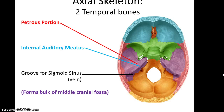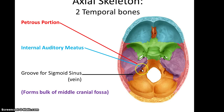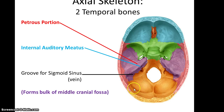Take the top of the skull off and look down. You see the temporal bone also has the petrous portion, where the inner workings of the ear will be. It has the internal auditory meatus and a groove for the sigmoid sinus. That groove for the sigmoid sinus is actually continuous with the groove for the transverse dural sinus found in the occipital bone. The temporal bone forms the bulk of the middle cranial fossa.